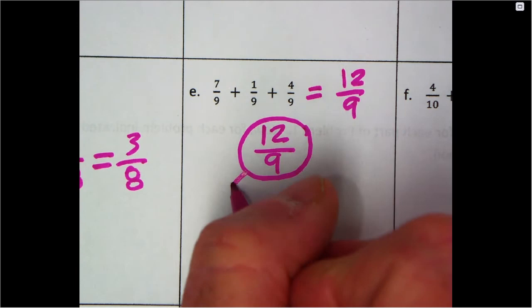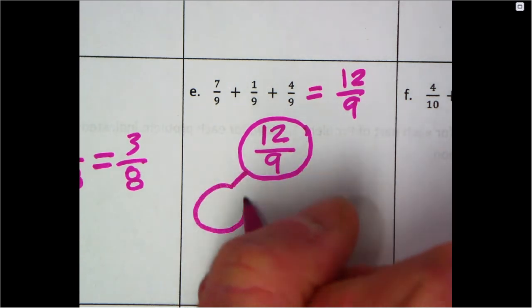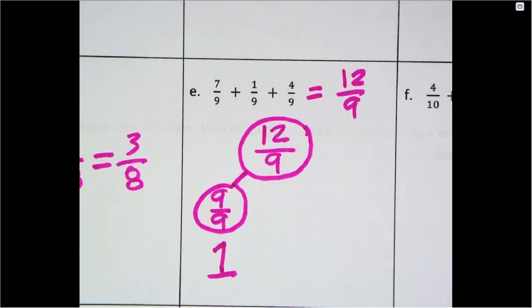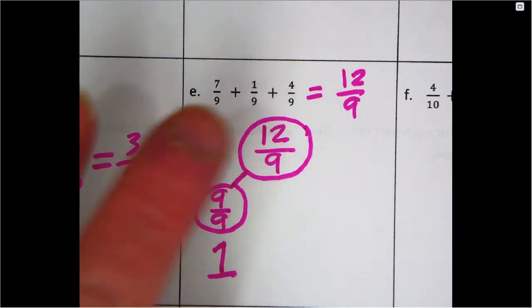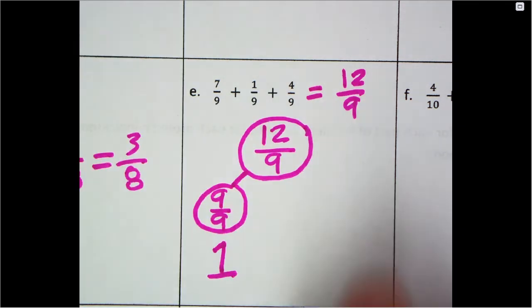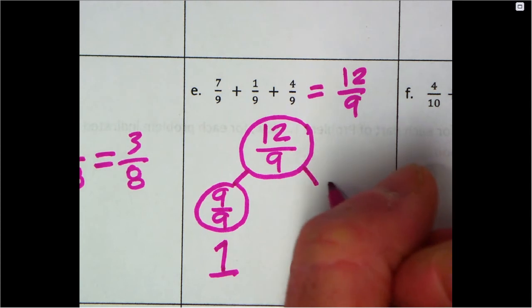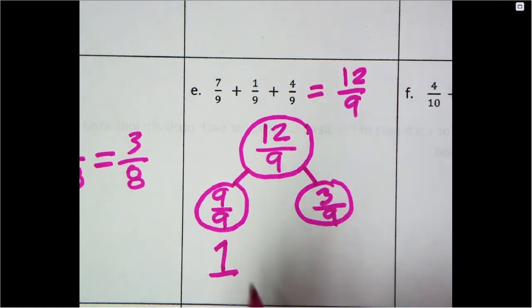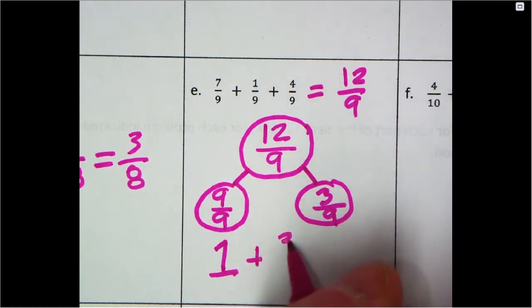What do 12/9 equal? Well, I know they equal 9/9, that's my one whole. What's left over? 9, 10, 11, 12, so that's 3/9. You could also just think about it as 12 - 9 is 3, so 3/9. One plus 3/9 equals 1 and 3/9.